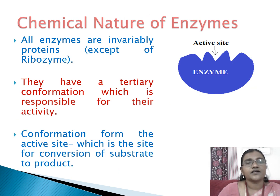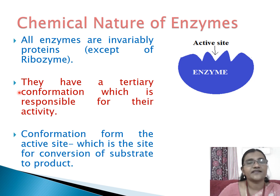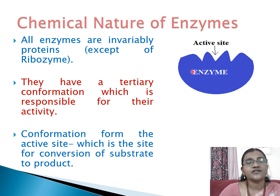Chemical nature of enzymes: Enzymes are proteins except for ribozyme. They have a primary structure which is the sequence of amino acids, a secondary structure having alpha helices and beta sheets, and then a tertiary structure. This tertiary structure gives the conformation to the enzyme responsible mainly for its activity. During folding, it leads to the formation of a pocket called the active site, which is the site where conversion of substrate to product takes place.